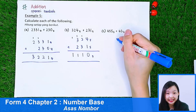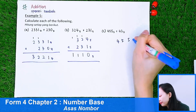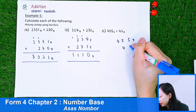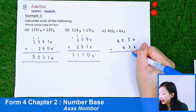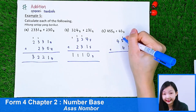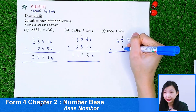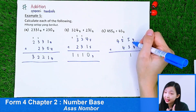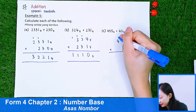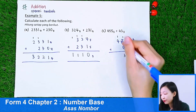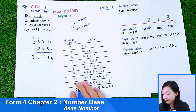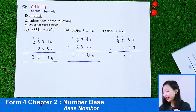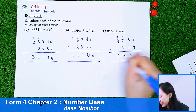Let's do the last addition example: 4, 5, 5 in base 7 plus 4, 3 in base 7. 5 plus 3 is 8 — subtract 7, leaving 1, carry 1. 1 plus 5 plus 4 is 10 — subtract 7, leaving 3, carry 1. 1 plus 4 is 5 — we can write 5 because the highest digit for base 7 is 6. So the final answer is 5, 3, 1 in base 7.